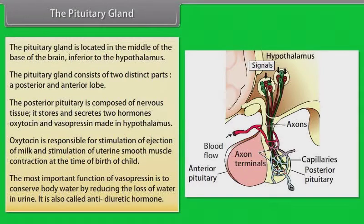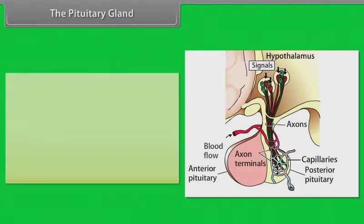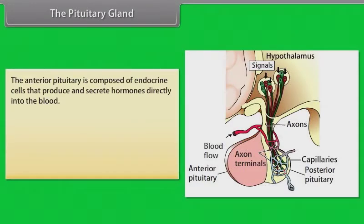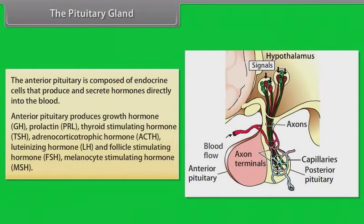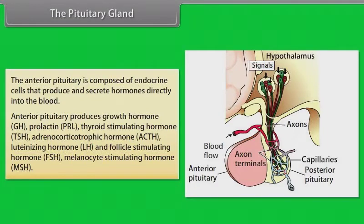Vasopressin, also called anti-diuretic hormone, conserves body water by reducing the loss of water in urine. The anterior pituitary is composed of endocrine cells that produce and secrete hormones directly into the blood. Anterior pituitary produces growth hormone (GH), prolactin (PRL), thyroid-stimulating hormone (TSH), adrenocorticotrophic hormone (ACTH), luteinizing hormone (LH), follicle-stimulating hormone (FSH), and melanocyte-stimulating hormone (MSH).